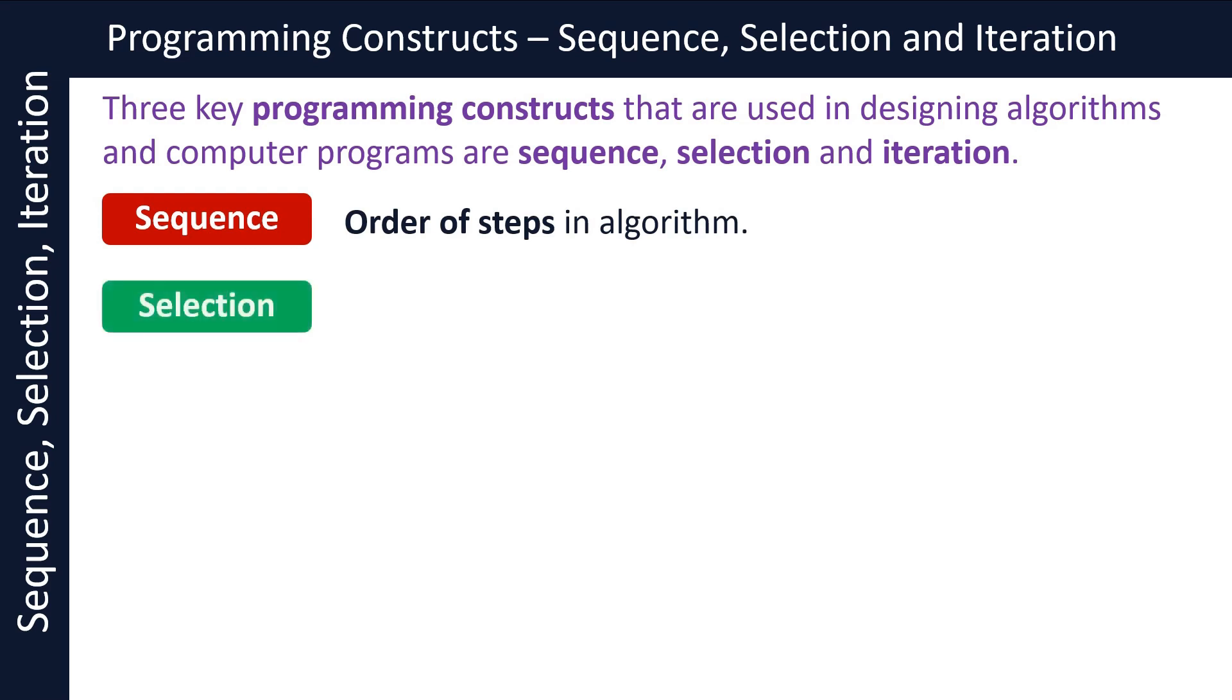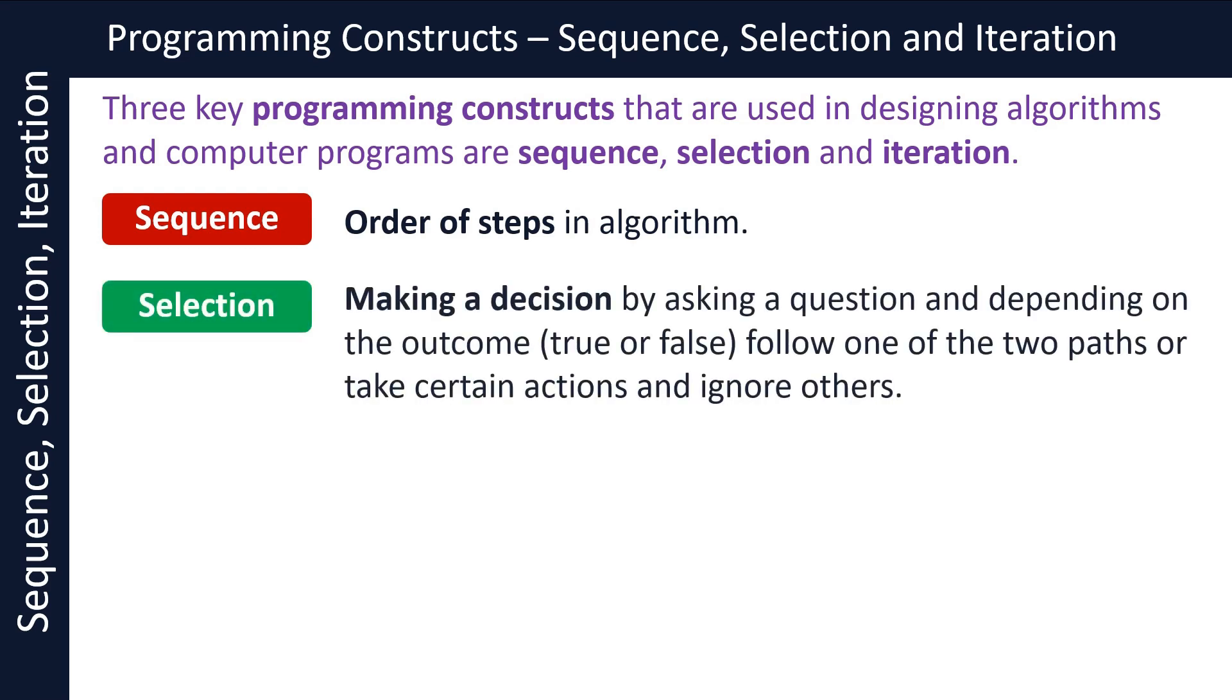Selection: here you are making a decision by asking a question, and depending on the outcome you follow one of the two paths or take certain actions and ignore others. The type of question you ask in selection should always have no more than two answers. Typical questions are where you have true or false or yes and no type of answers.